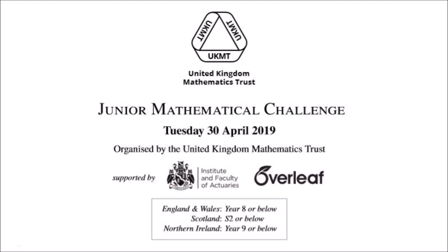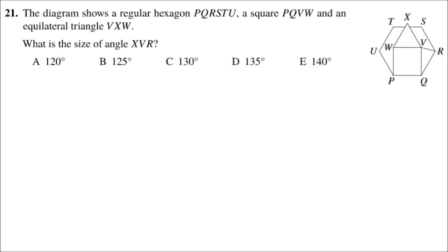Hello, today I'm going to be explaining question 21 from the UKMT Junior Math Challenge 2019. The diagram shows a regular hexagon PQRSTU, a square PQVW, and an equilateral triangle VXW. What is the size of angle XVR?